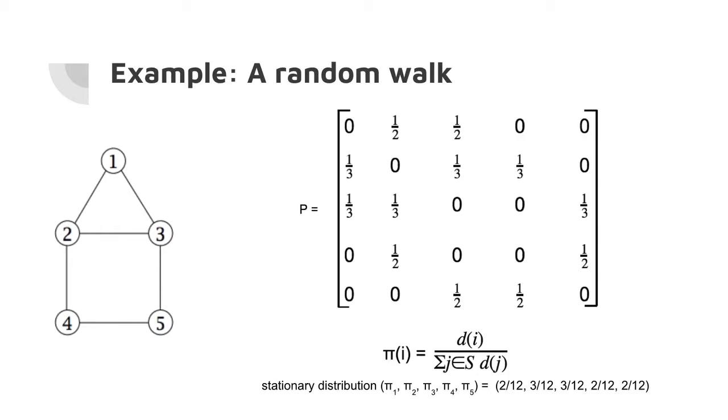Each row of the transition matrix represents being in a particular state, and the probabilities are linked to the probability that you travel from your current state to your next state. Your probabilities in your rows always add to 1 because you have to be somewhere in the next state.